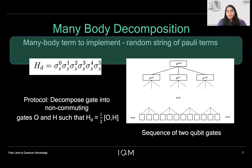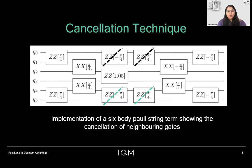As you can see, this many-body decomposition has a lot of interesting features. Let me talk to you about some of them. Here is an implementation of a six-body Pauli string term. The two-qubit gates between qubits 0 and 1 and qubits 4 and 5, the ZZ interaction, come with opposite coupling strengths and therefore can be canceled. This leads to a lesser number of two-qubit gates to be implemented, as well as a reduction in the depth of the circuit.